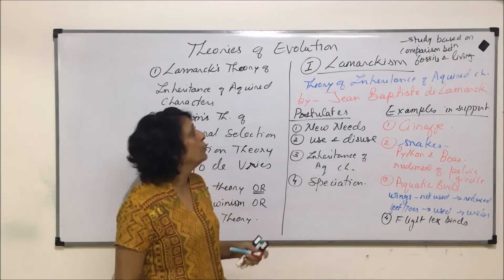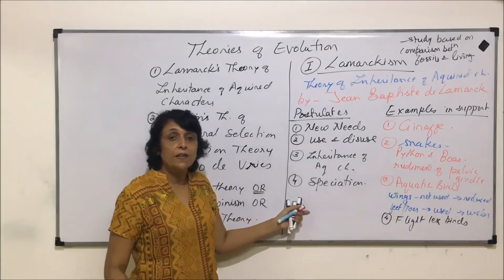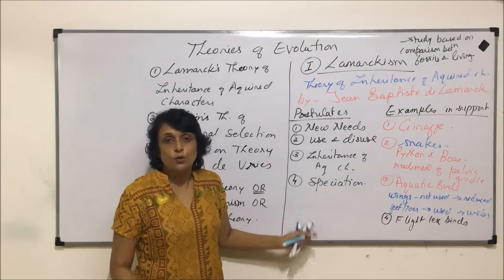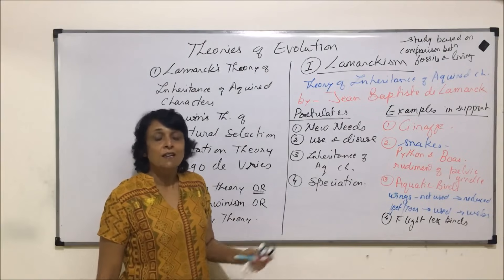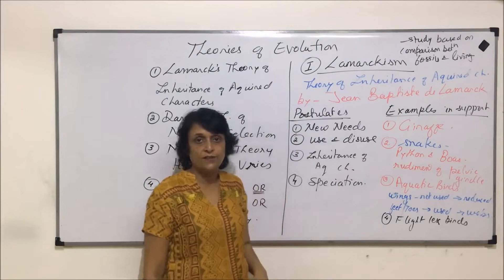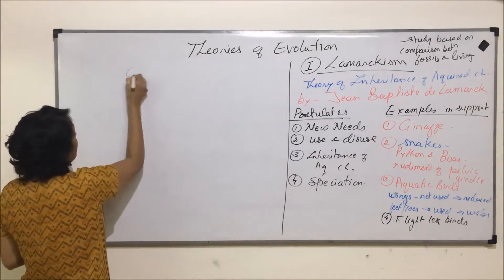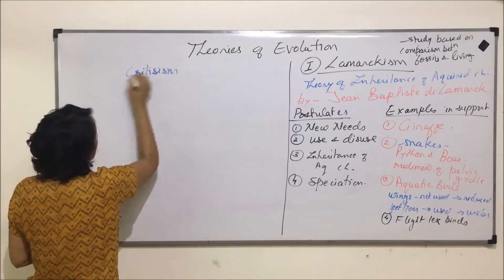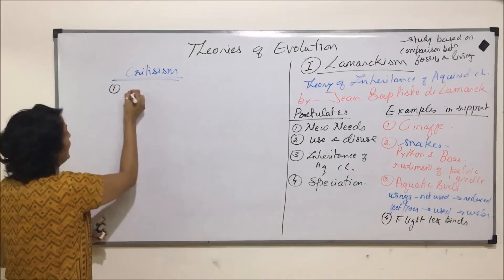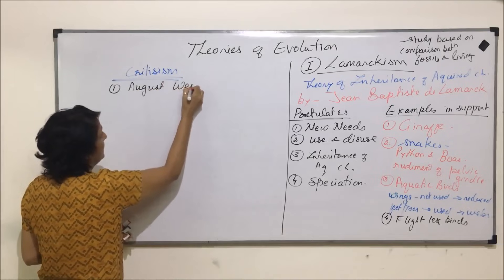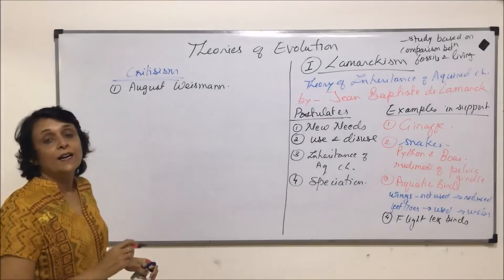There are many examples in support of Lamarckism, but there were also a couple of examples against it — discussed under the criticism of Lamarckism. The first experimental criticism came from a scientist named August Weismann, who is also known for giving the theory of continuity of germplasm.